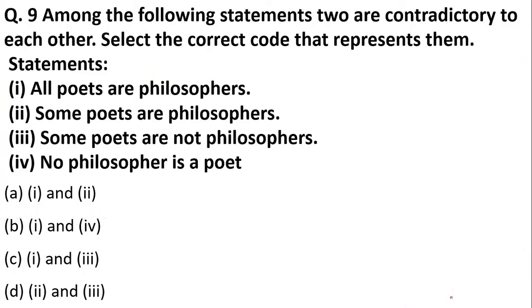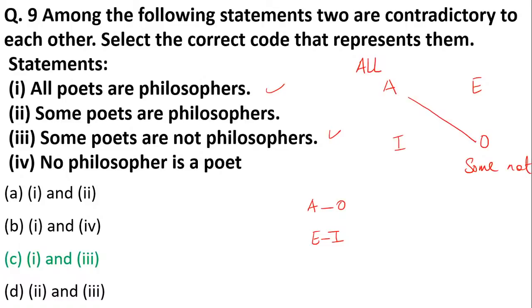Among the following, which are contradictory to each other? Options: all poets are philosophers; some poets are philosophers; some poets are not philosophers; no philosopher is a poet. We have already seen a question on contradictory relationships, so let's move on to the next question.